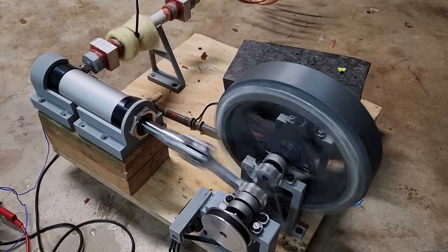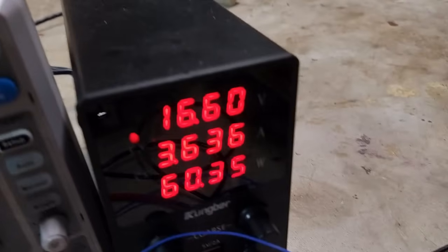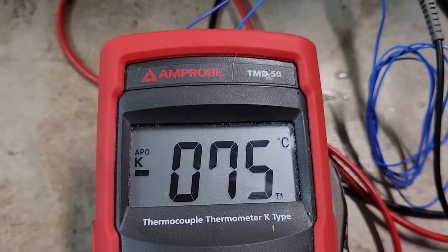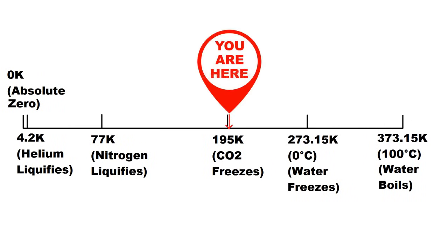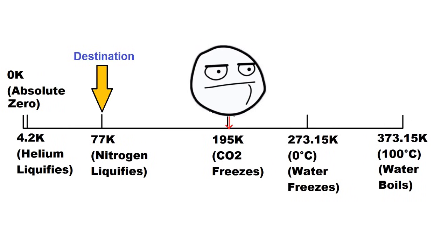In this video I'm going to improve on the pulse tube cooler from my last video and build a device that can cool down to minus 75°C, which is almost cold enough to freeze carbon dioxide. Of course this is still a long way from my goal of creating liquid nitrogen which condenses at minus 196°C, but still a big leap forward from my first attempt which only managed to drop the temperature by a few degrees.